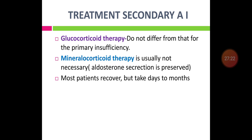Treatment of secondary adrenal insufficiency: glucocorticoid therapy is similar to primary adrenal insufficiency. Mineralocorticoid therapy is not necessary because aldosterone secretion is preserved. Most patients with secondary adrenal insufficiency will recover, but it takes time — from days to months.